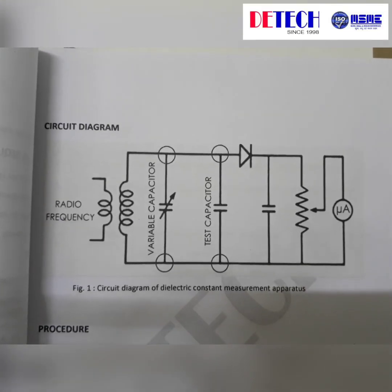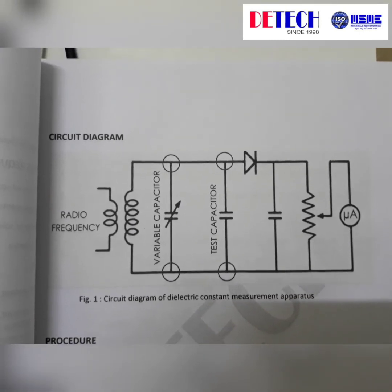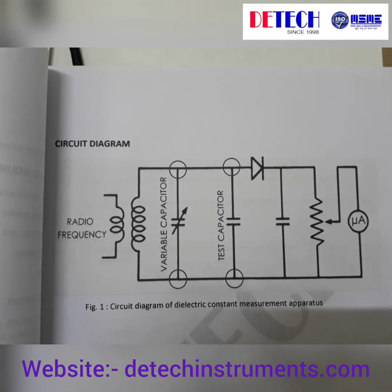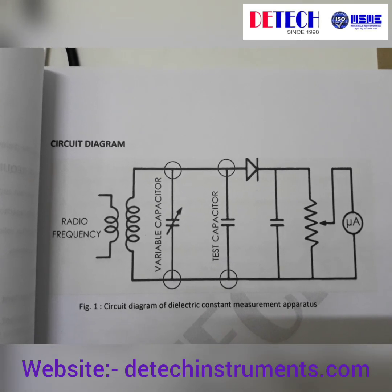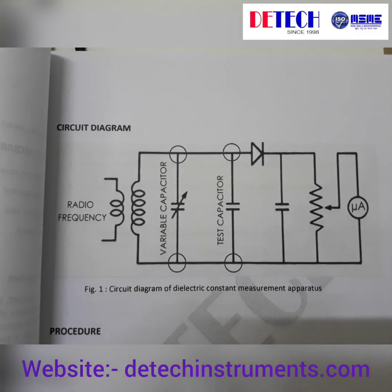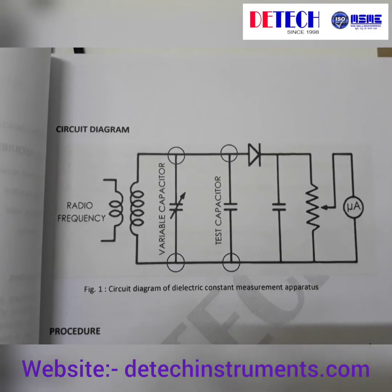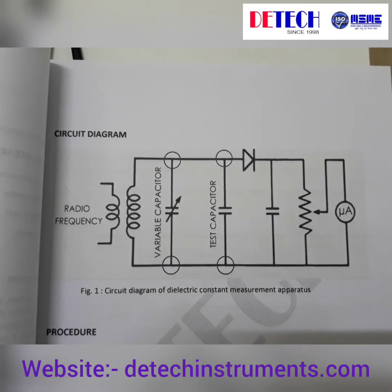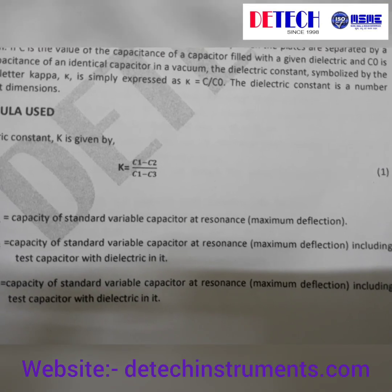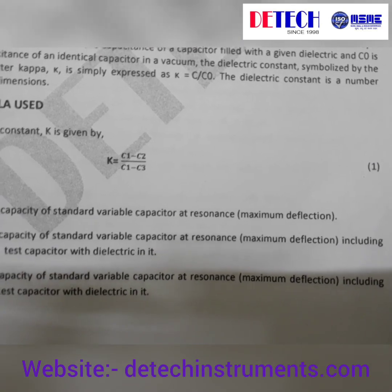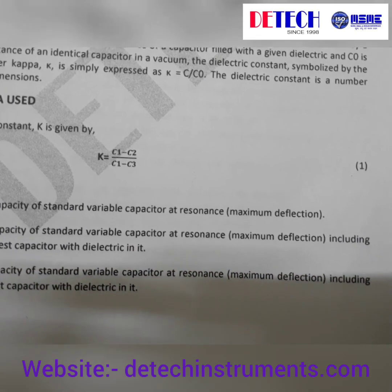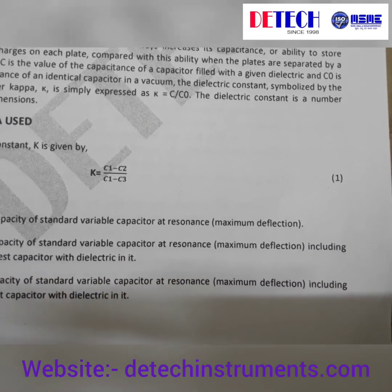This is the circuit diagram as given in the manual. There are four terminals for connecting the variable capacitor and also the test capacitor. The radio frequency of 4 MHz is inbuilt and we have an analog microammeter where we can see the variation of the current. We can calculate the dielectric constant using the formula: K is given by C1 minus C2 divided by C1 minus C3, where C1, C2, and C3 are explained here.